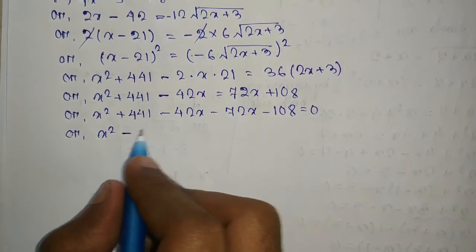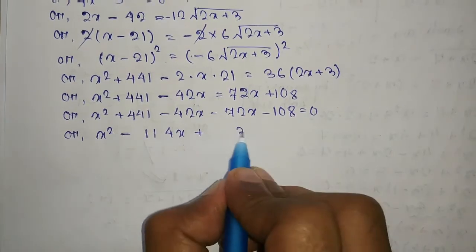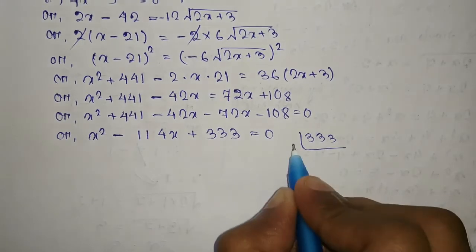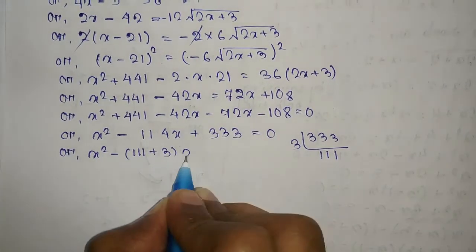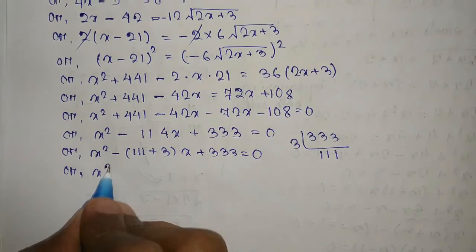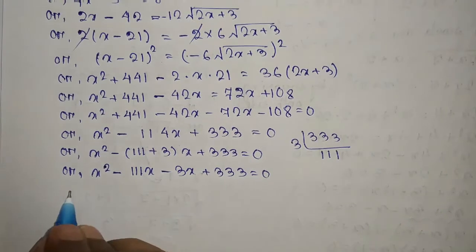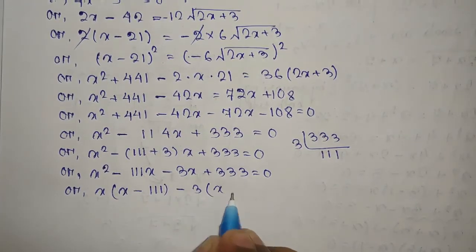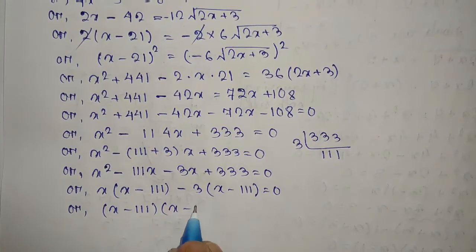We have x² minus 114x plus 333 equal to 0. Splitting the middle term: x² minus 111x minus 3x plus 333 equal to 0. Taking common factors: x(x minus 111) minus 3(x minus 111) equal to 0, so (x minus 111)(x minus 3) equal to 0.